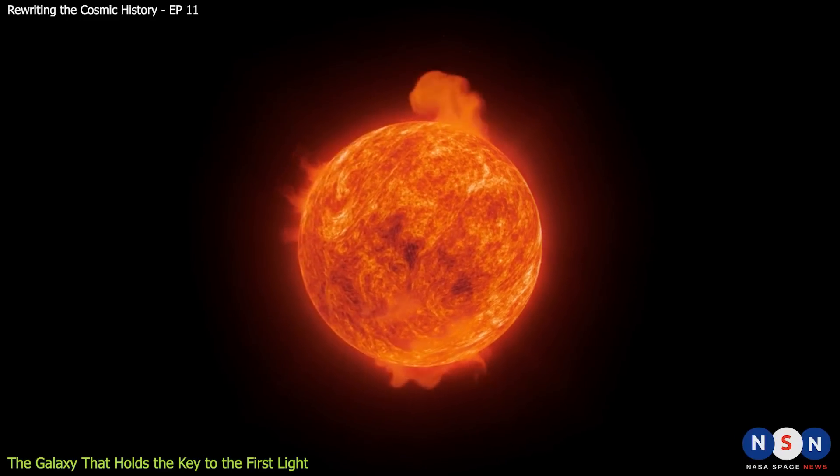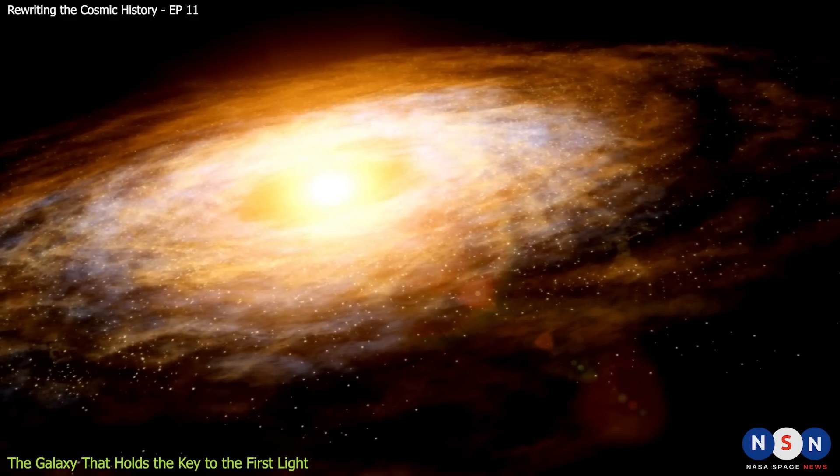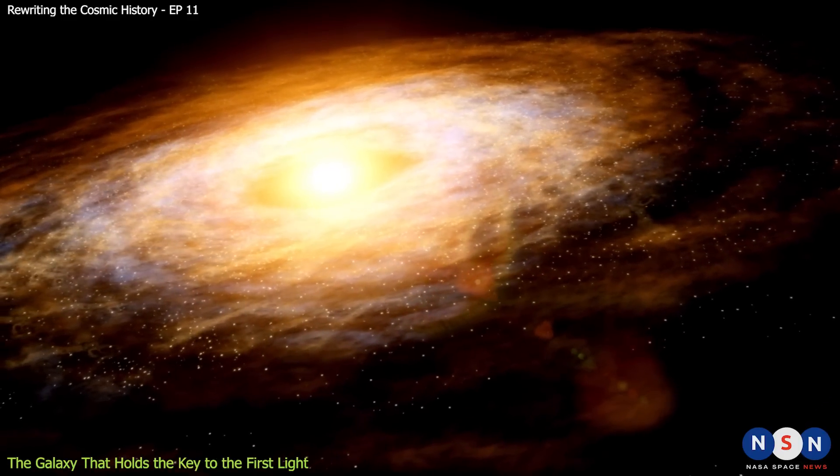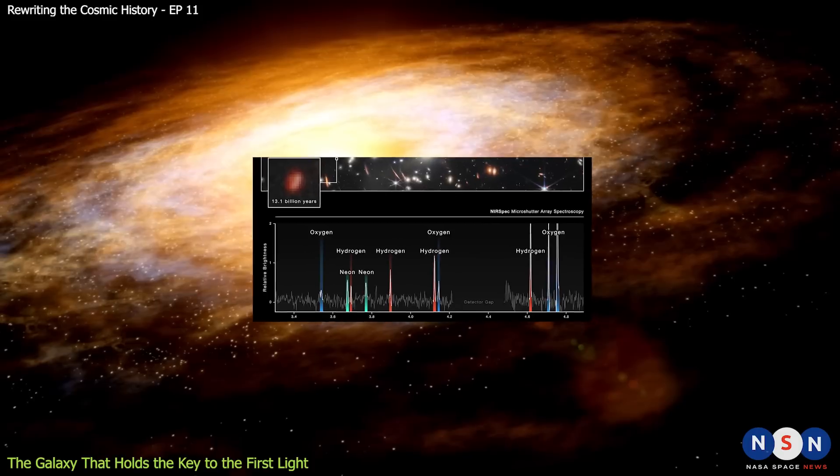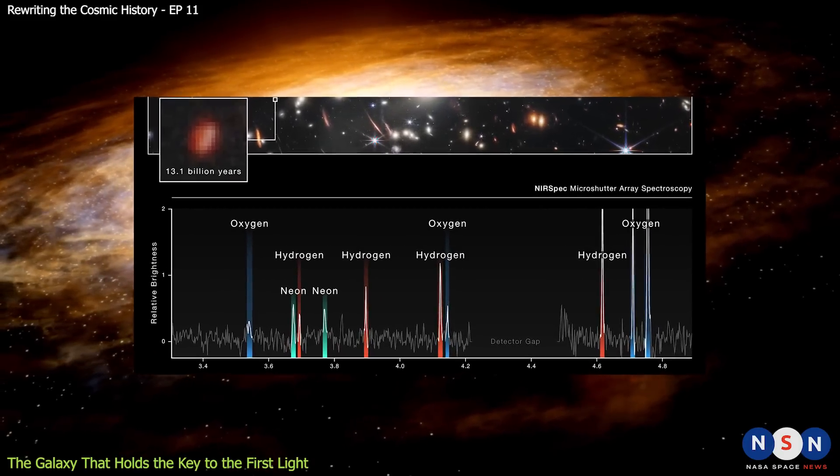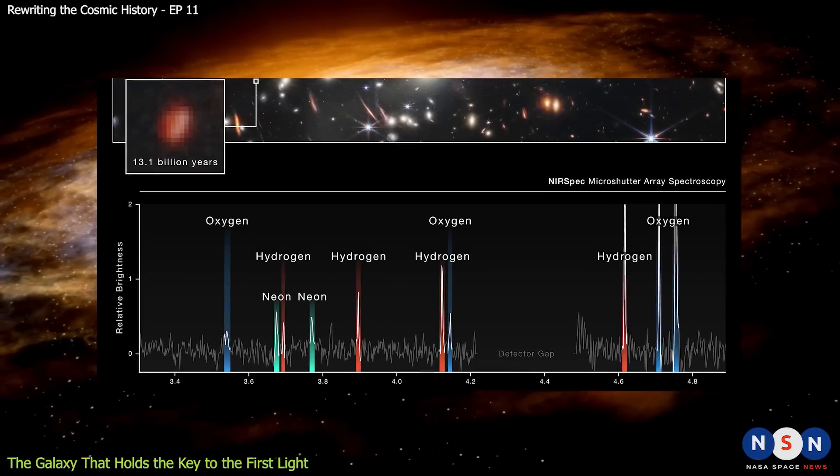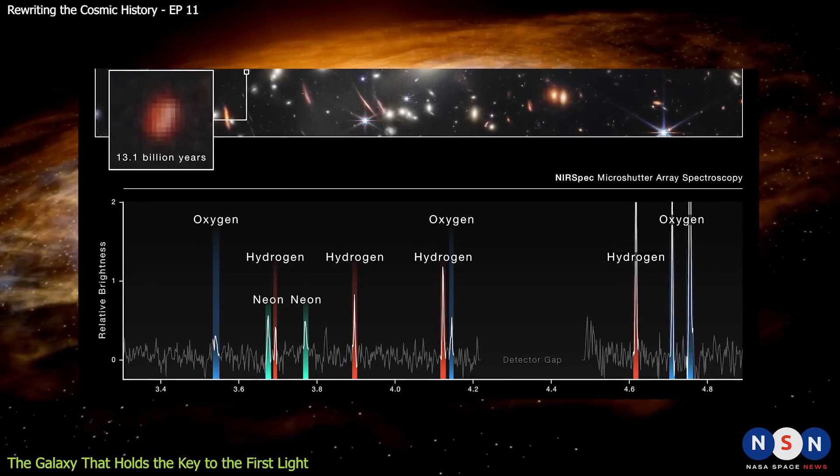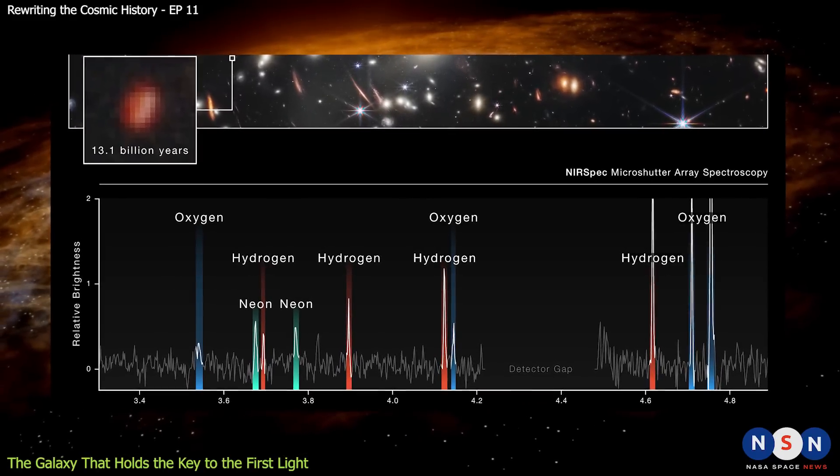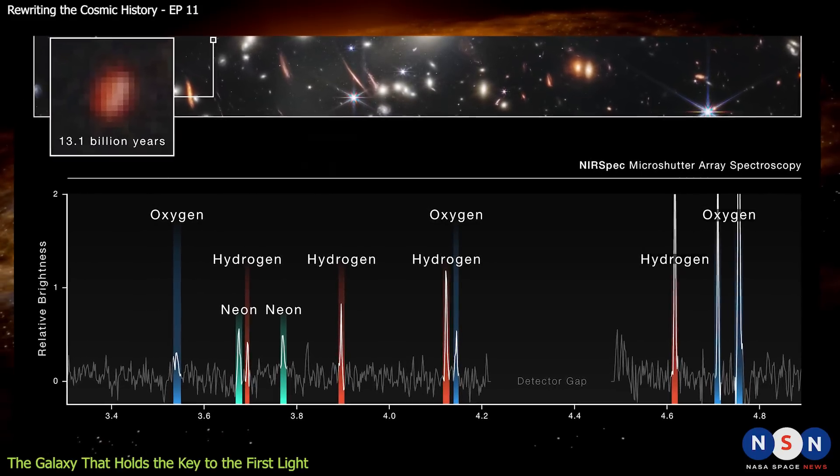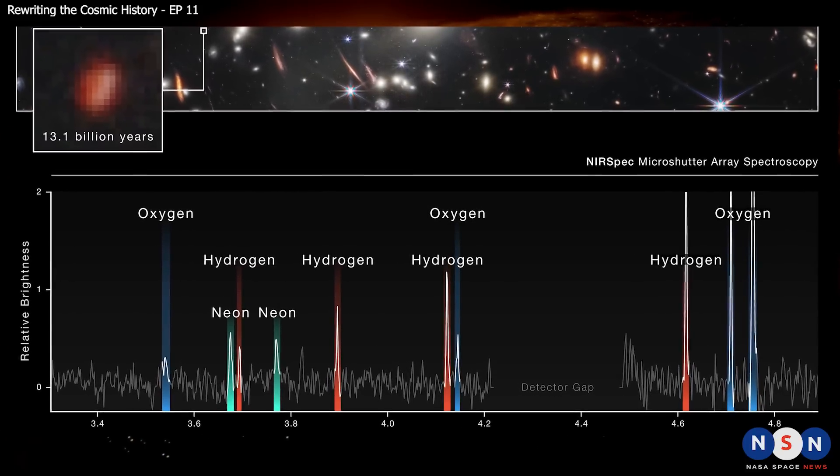But how can we tell if GNZ 11 still contains Pop 3 stars or not? To answer this question, we need to look at its spectrum, which is the distribution of light by wavelength. By analyzing the spectrum of a galaxy, we can learn about its chemical composition, temperature, age, and distance. But to do this, we need a very powerful telescope that can collect enough light from such a faint and distant object.